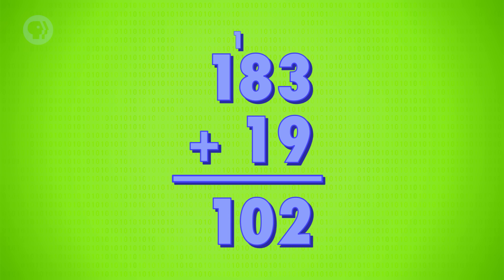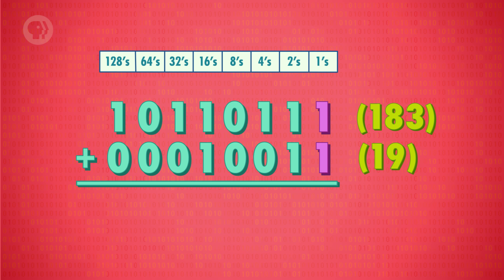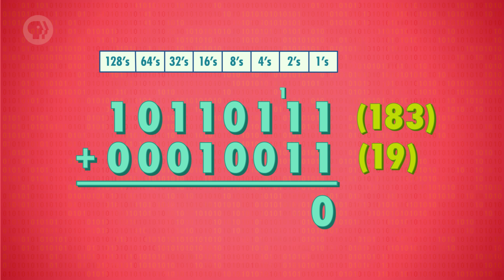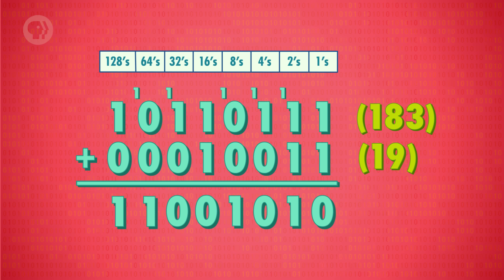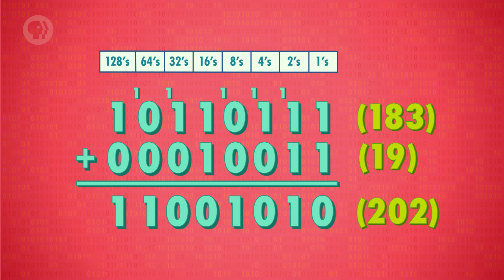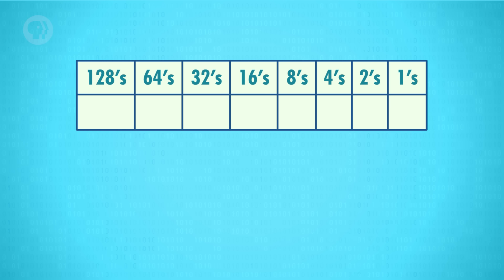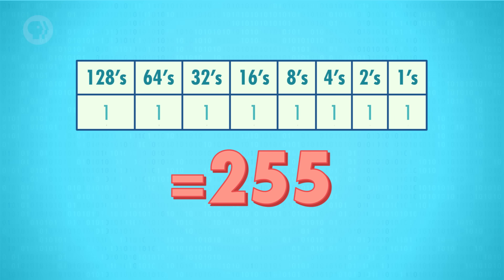Math with binary numbers isn't hard either. Take decimal addition of 183 plus 19: we add 3 plus 9, that's 12, so we put 2 as the sum and carry 1. Then 8 plus 1 plus the carried 1 equals 10, so sum is 0, carry 1. Finally, 1 plus the carried 1 equals 2, giving us a total of 202. Here's the same sum in binary. Starting with the ones column, 1 plus 1 equals 2 — but there's no symbol 2, so we write 0 and carry 1, just like in decimal. We end up with the binary result equivalent to 202 in base 10.